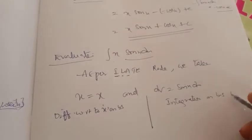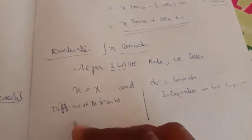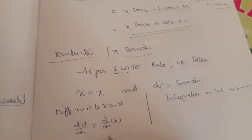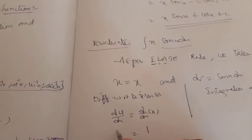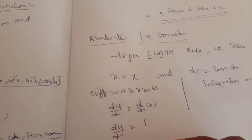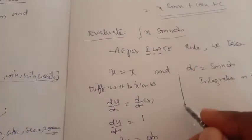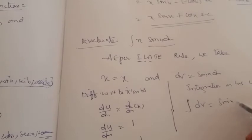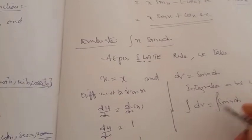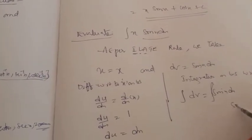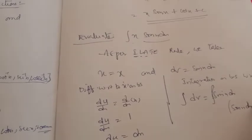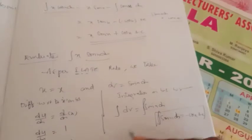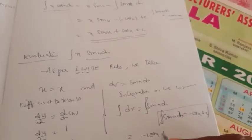Differentiating with respect to x on both sides: du by dx equals d by dx of x equals 1, so by cross multiplication du equals dx. For the second function, integrating: integral dv equals integral sin x dx. The formula gives integral sin x dx equals minus cos x plus c, so v equals minus cos x plus c.